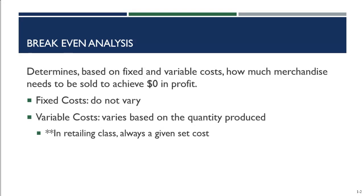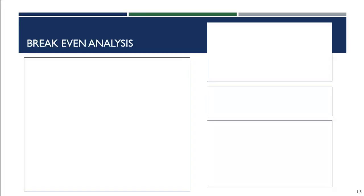Variable costs are based on the quantity of merchandise produced. An example might be the labor hours that go into it, or the cost of keeping the lights on in the production facility depending on how many items we produce. For this retailing class, these values are always going to be given to us. If you've had your finance class, you've walked through this in more depth.